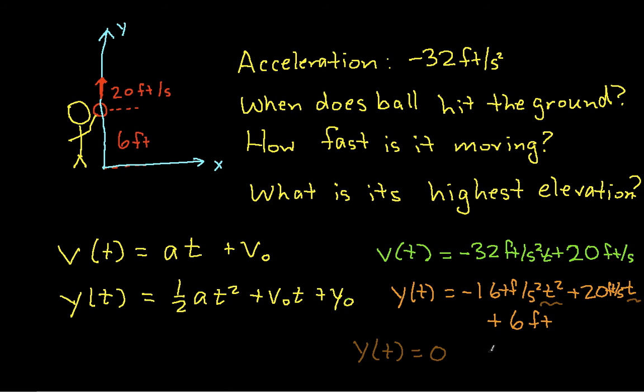And so I could solve it with the quadratic formula, where t would be negative 20, plus or minus the square root of 20 squared minus 4 times 16 times 6, all of that divided by 2 times minus 16. So that's the quadratic formula.